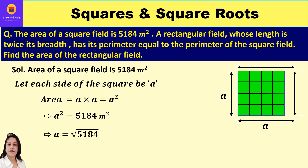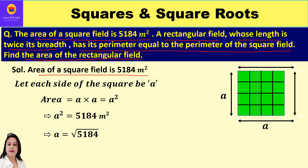The question is: the area of a square field is 5184 square meters. A rectangular field whose length is twice its breadth has its perimeter equal to the perimeter of the square field. Find the area of the rectangular field. Given to us: area of a square field is 5184.